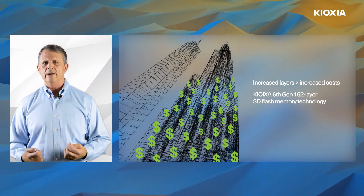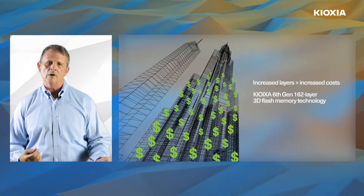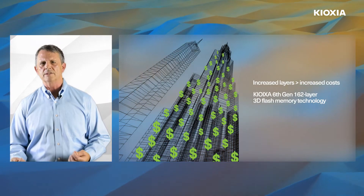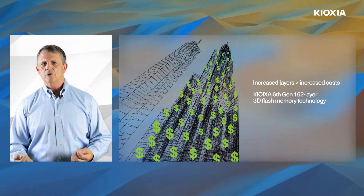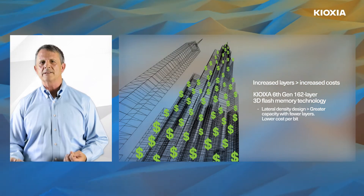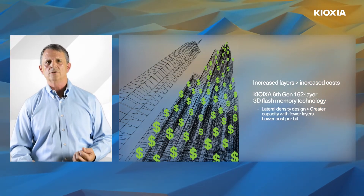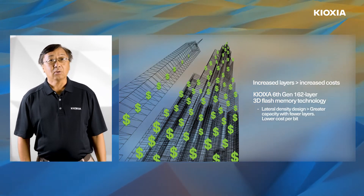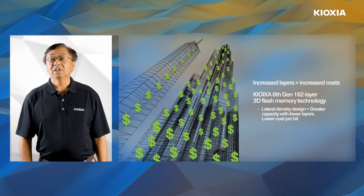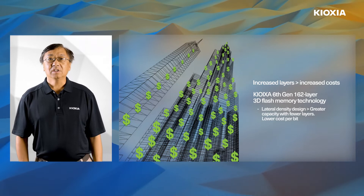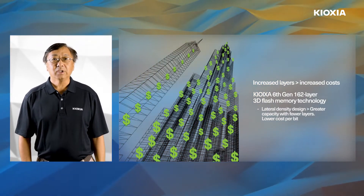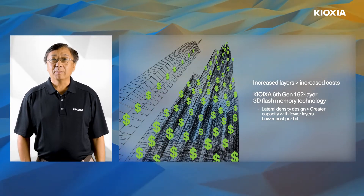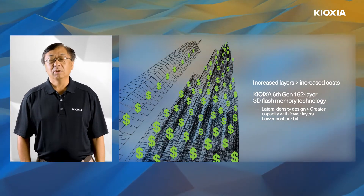What if a builder found a way to increase the capacity of each floor? Maybe there are fewer copy rooms to accommodate more offices. You could then achieve the same capacity with fewer floors. And this illustrates the significance of lateral density, as seen in Kioxia's 6th generation 162-layer 3D flash memory technology. With lateral density, we achieve greater capacity in a smaller die with fewer layers.